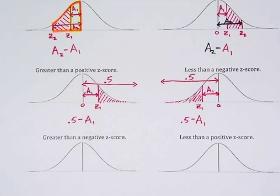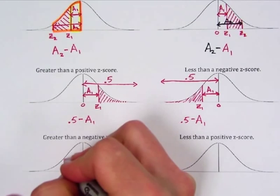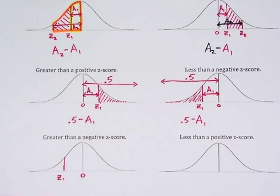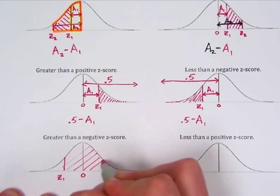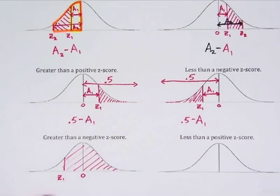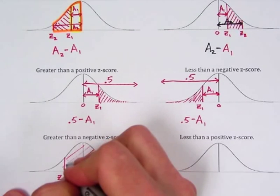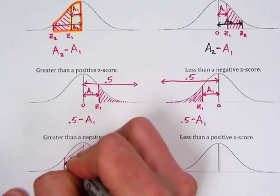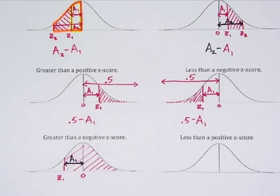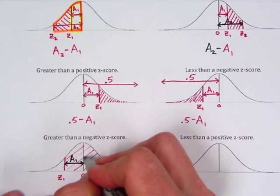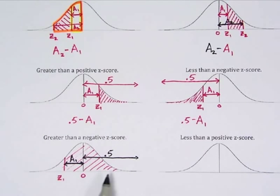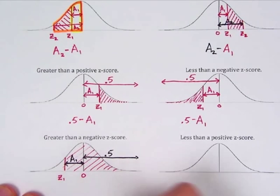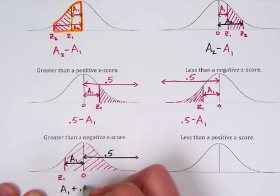For greater than a negative z-score: here's our negative z-score and our mean. We shade everything to the right. When we look up the z-score in the table, it gives us the area A₁ from the mean to the z-score. But we also need to include all the area to the right of the mean, which is 0.5. So in this case, the total area is A₁ + 0.5.